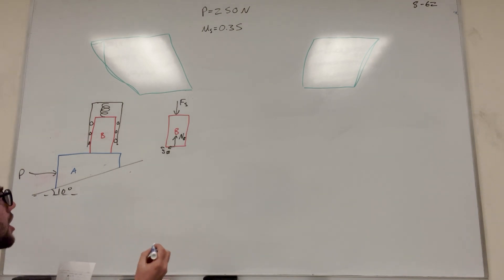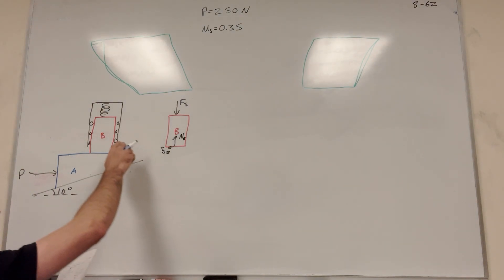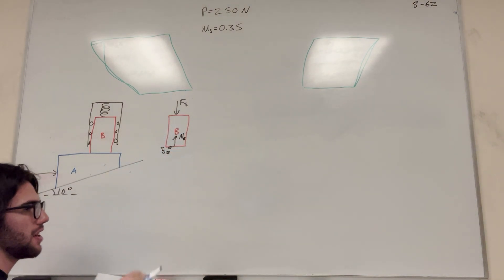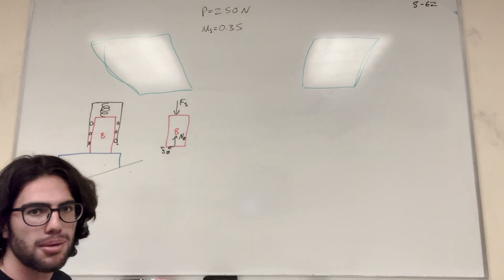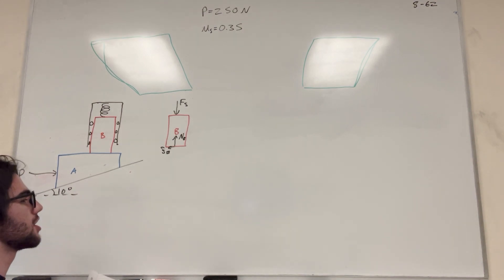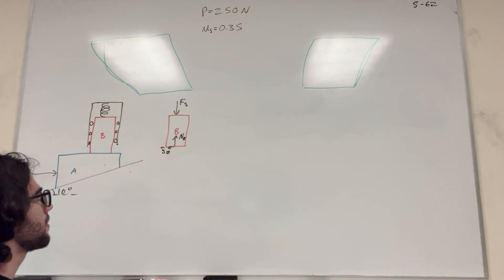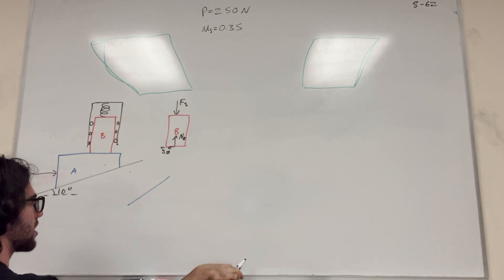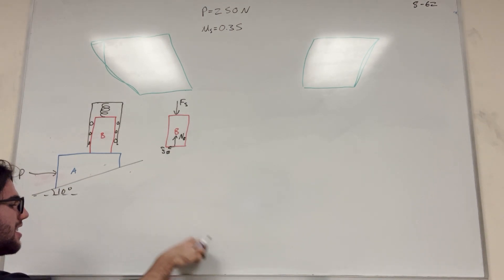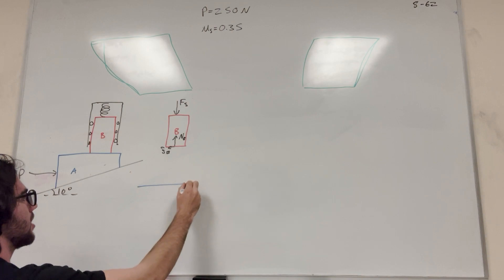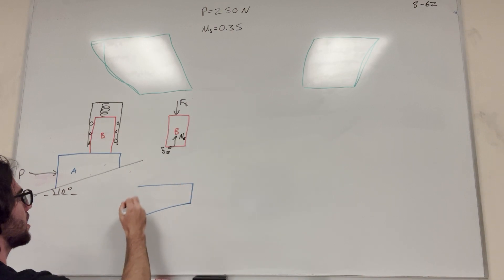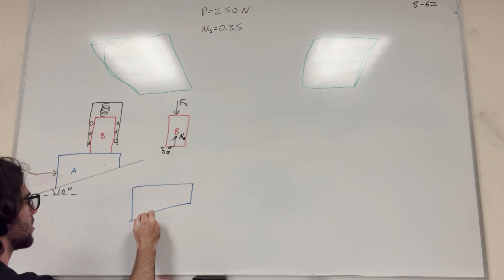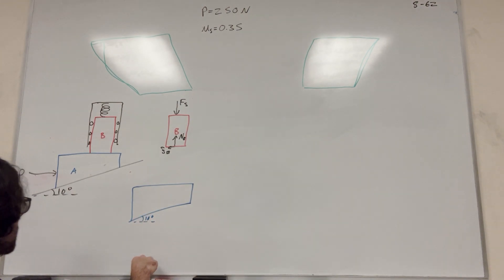So then we also have block A, so let's go ahead and draw that. We also have all these rollers — the rollers are going to prevent the block from moving, but they're not going to be a big part of this equation, so we're going to go ahead and just ignore them for now. You can draw them in if you want — they'll just be forces pointing inwards. So then we have A here, and we know that this angle is 10 degrees.